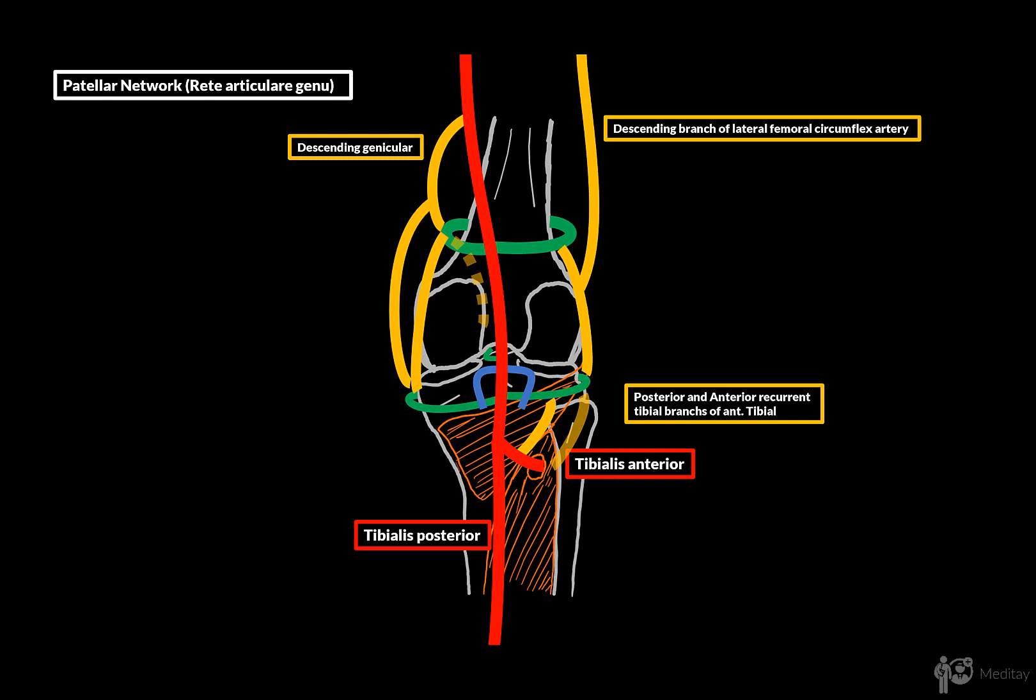Lastly, the posterior tibial artery gives off the circumflex fibular branch to also take part in the patellar network by anastomosing with the inferior lateral genicular artery.